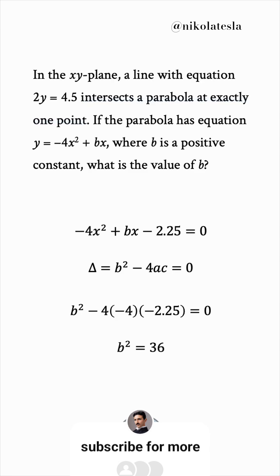To find b, we take the square root of 36. Usually we take the positive and negative square roots, but because the problem says b is a positive constant, we'll only have the positive solution, b equals 6.